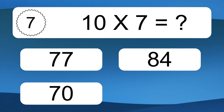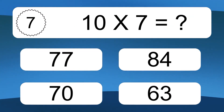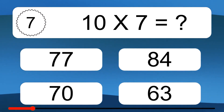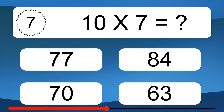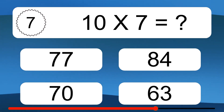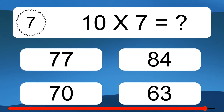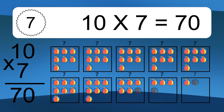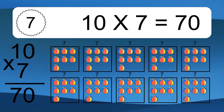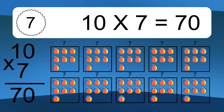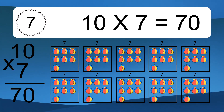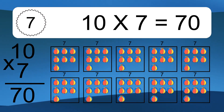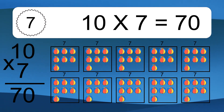10 times 7 equals what? We have 10 boxes, and each box has 7 colorful balls inside. If you count all the balls in all the boxes together, you will have 10 times 7 balls. This equals 70 balls.